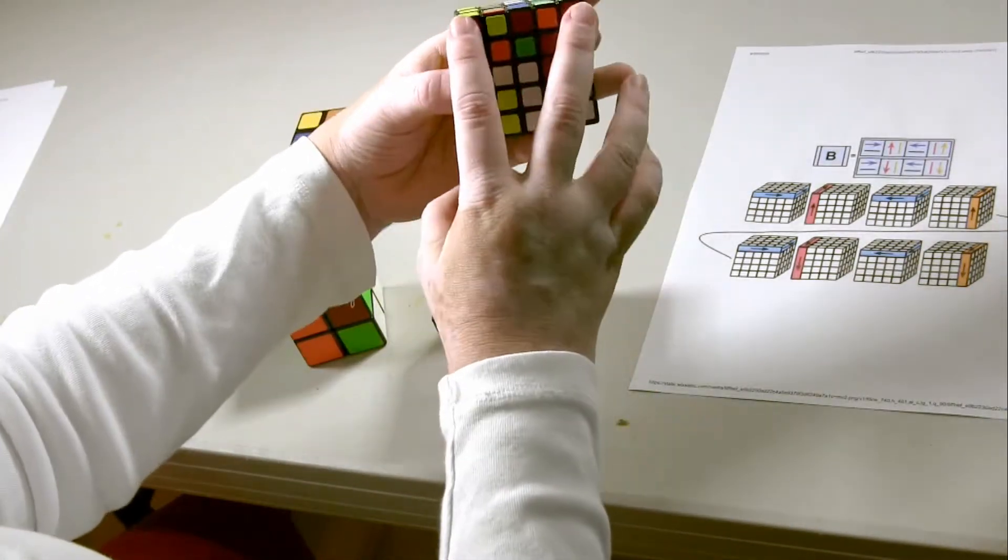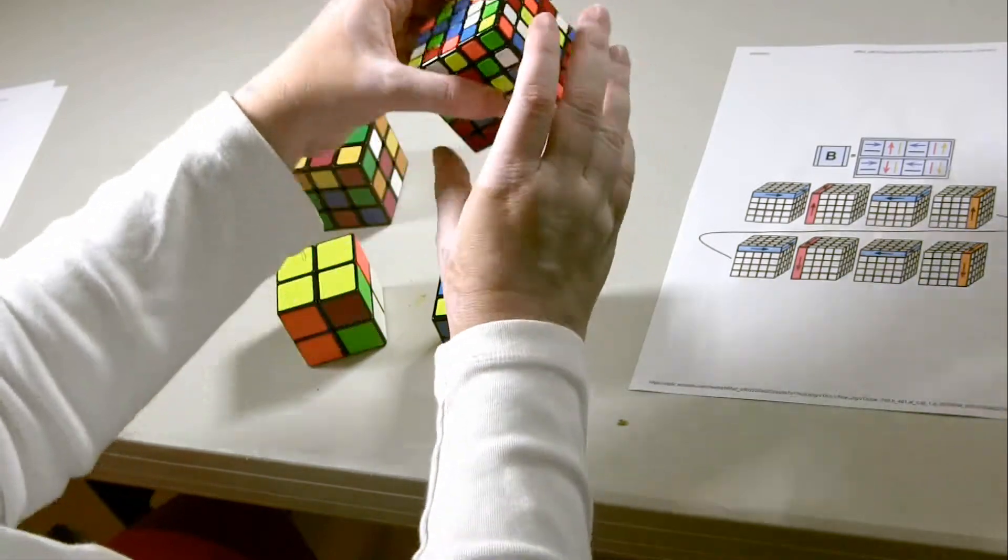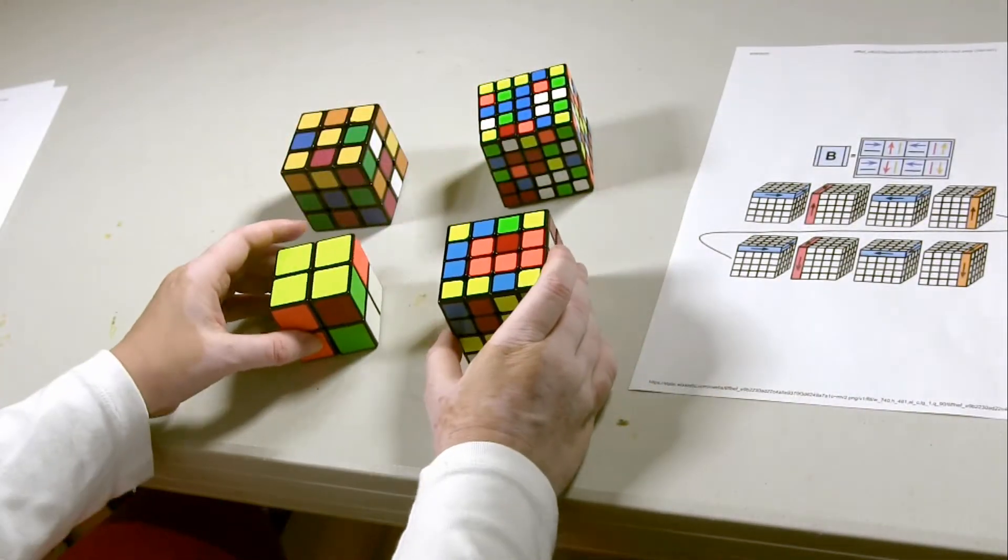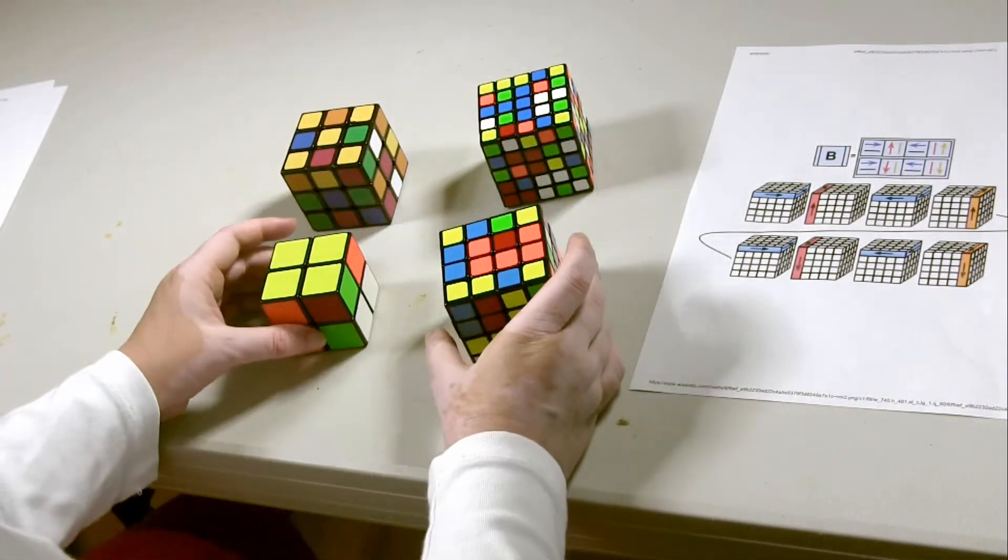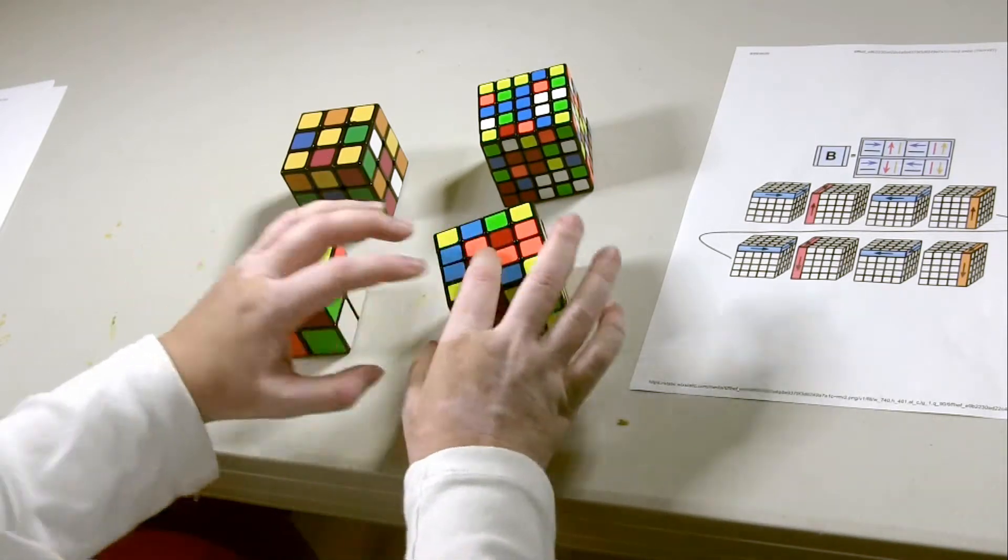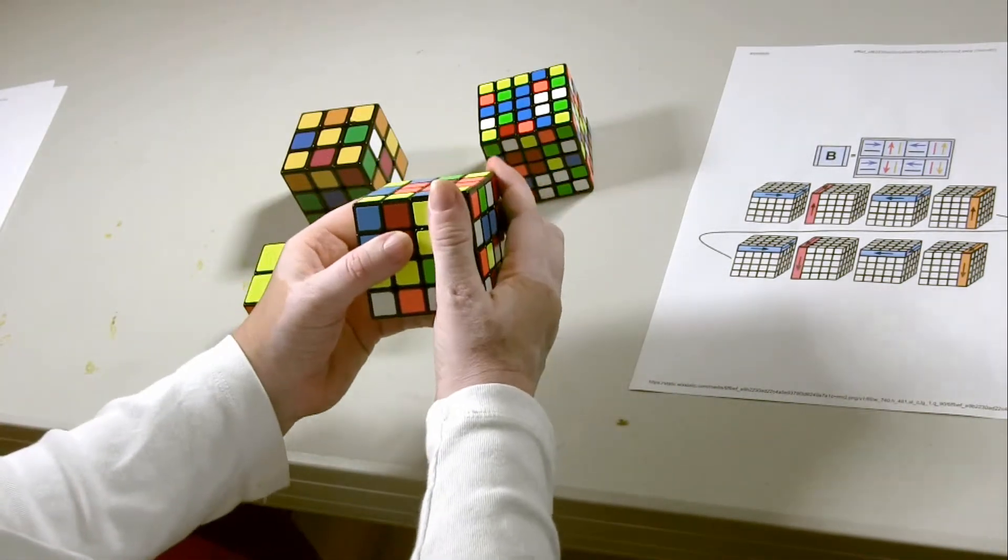And this corner, they all match, so this one doesn't need to do this step, this one's already done. These ones have a match, this one does not, so I'm going to start with one that doesn't have a match.